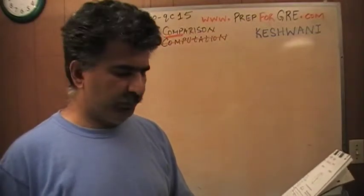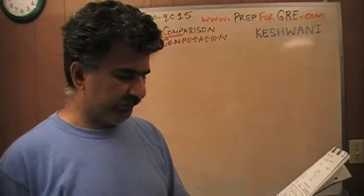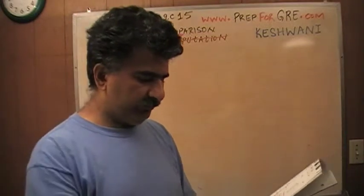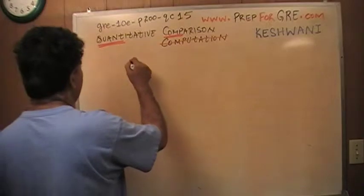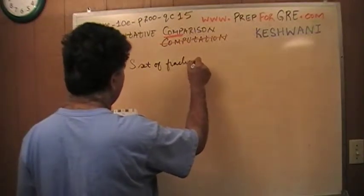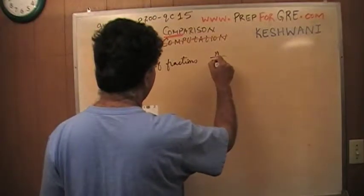I'm going to read it with you here. Make sure you open the book page number 200. Read it with me. It says S is a set of all fractions in the form. So S is a set of fractions of the form n over n plus 1.